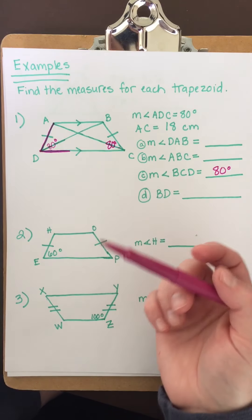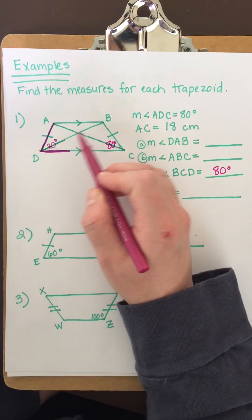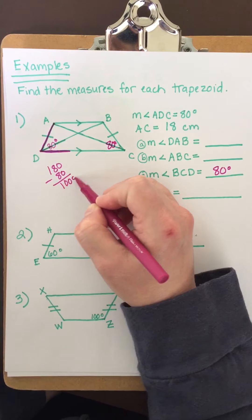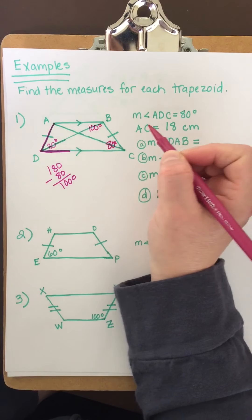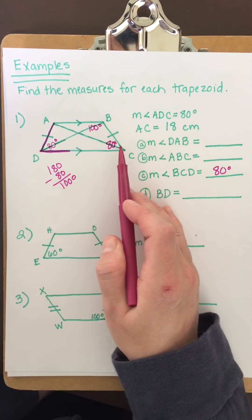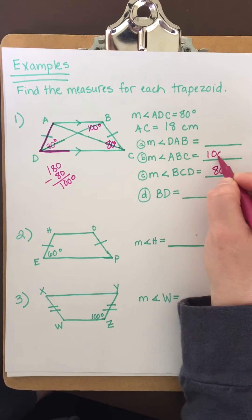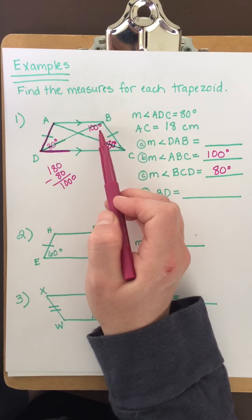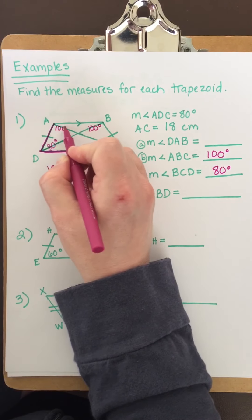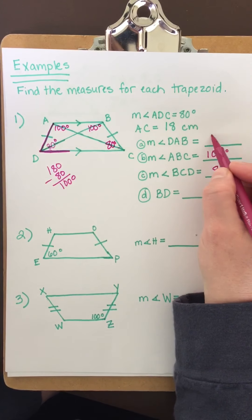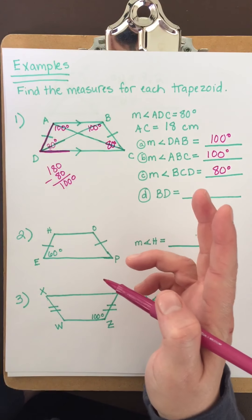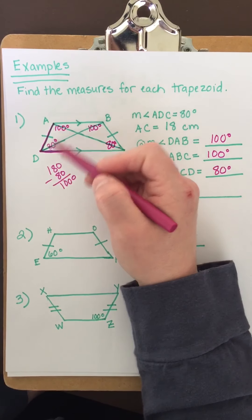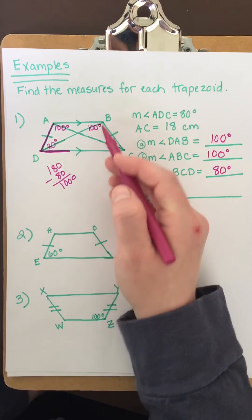If you remember, opposite angles are supplementary, so 180 minus 80 is 100 degrees — angle ABC is 100 degrees. We also know base angles are equal, and here's base AB, so angle DAB is also 100 degrees. In an isosceles trapezoid you only have two different angle measures: these two are the same, these two are the same, and each pair of opposite angles adds up to 180.